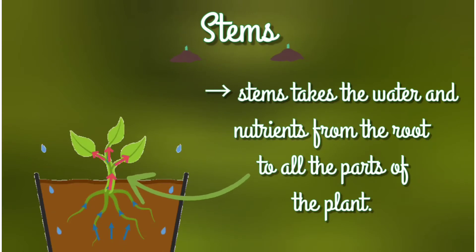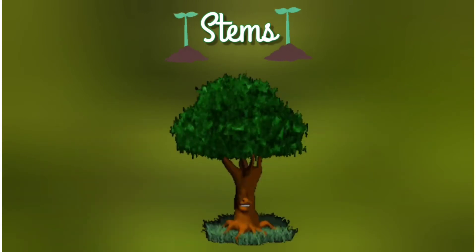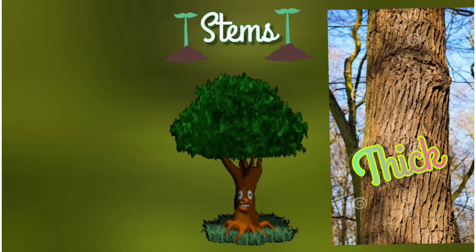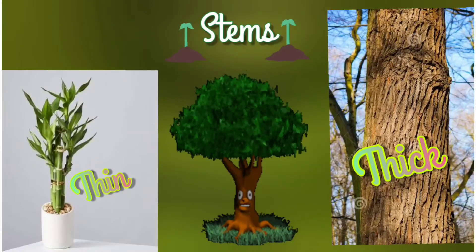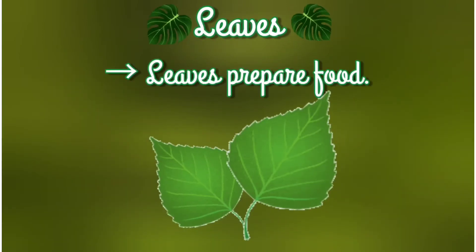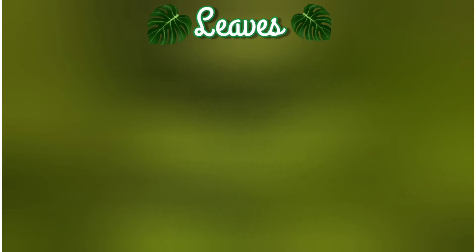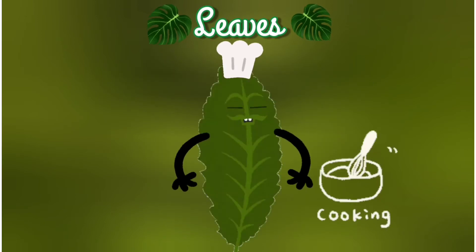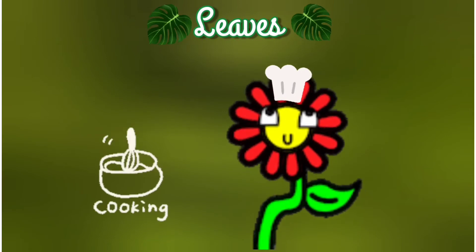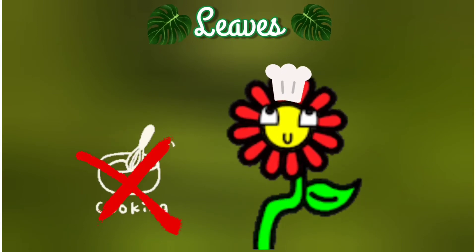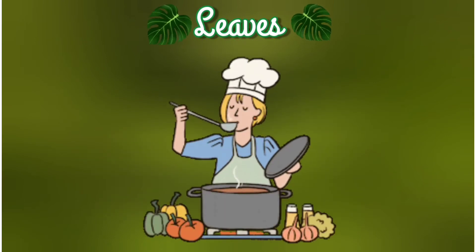This stem can be either thick or thin. The leaves prepare the food for the plant. Have you ever seen a leaf cooking? Oh no! Plants don't prepare food like how we do in the kitchen.